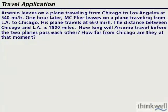Let's take a look at a real-world example where we can see velocities occurring at constant rates. So Arsenio leaves on a plane traveling from Chicago to Los Angeles. His plane travels at 540 miles per hour.